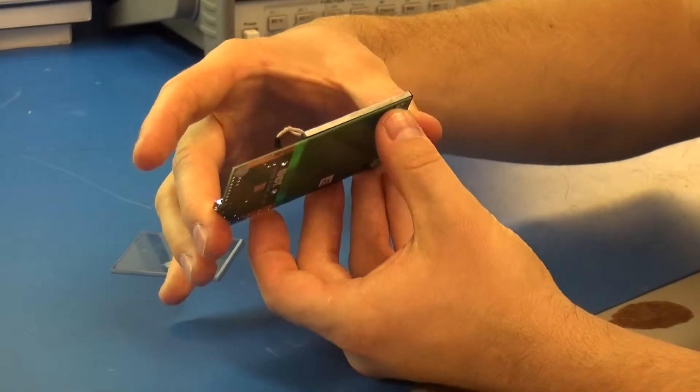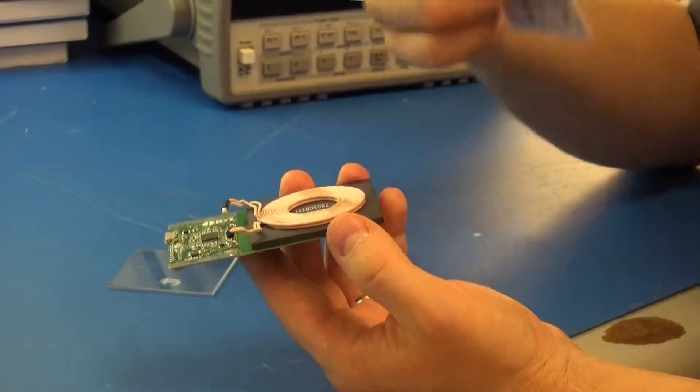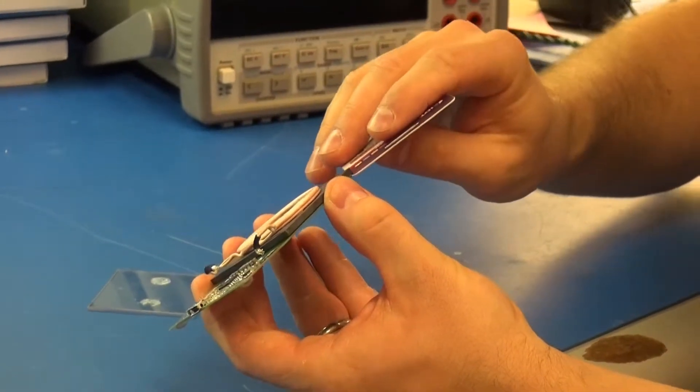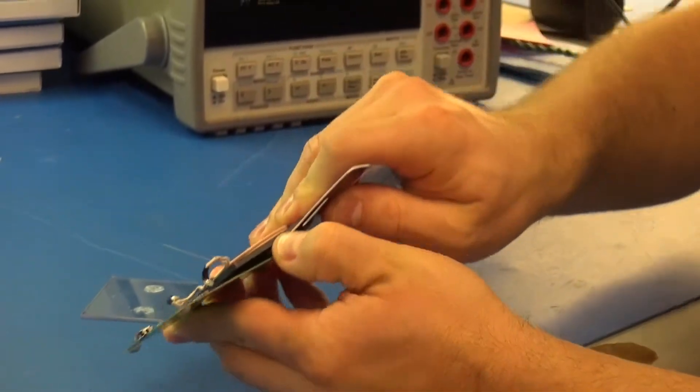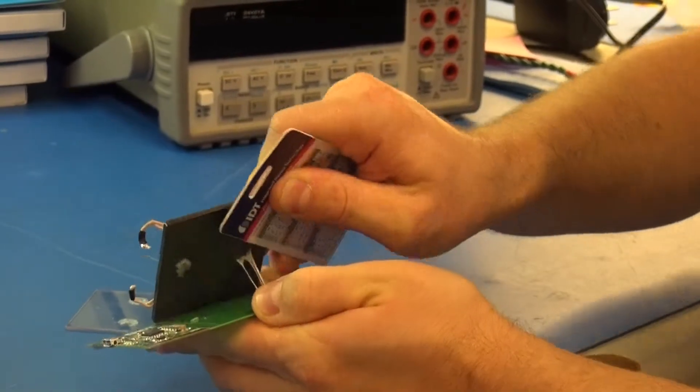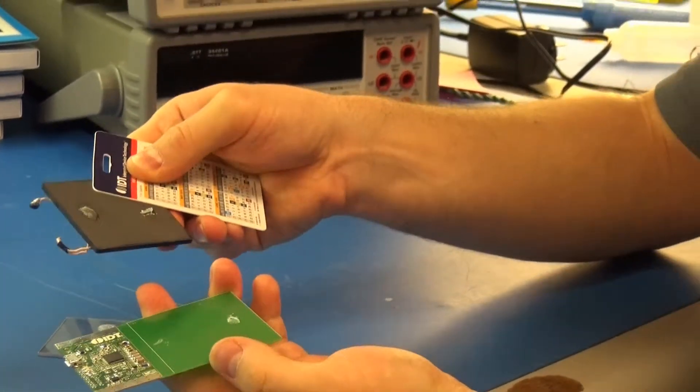It's kind of a tight fit so I would recommend to use a credit card or an employee badge to help you get started. But if you just work it under there and give it a good pry it'll come off. You'll see the glue dots there.